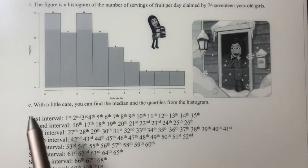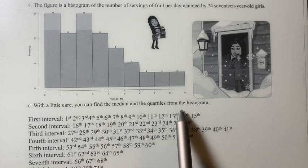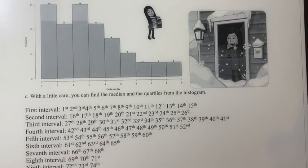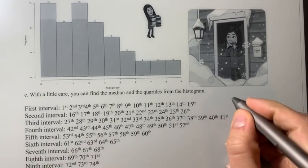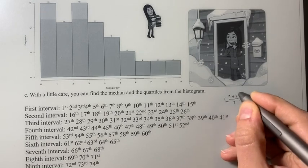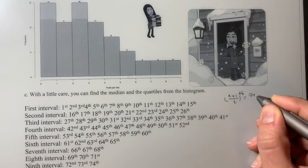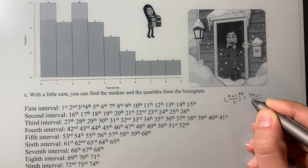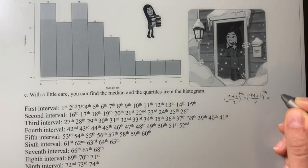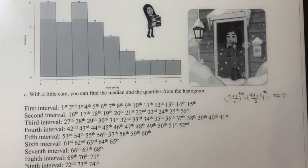So it says, with a little care, you can find the median and quartiles from the histogram. So in class, I explained we can use this formula, n plus 1 divided by 2, to find the location of the median. So we have 74 individuals plus 1 divided by 2, which gives us the location of median, which is 37.5.